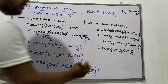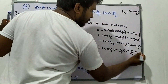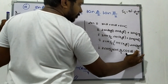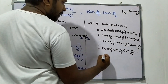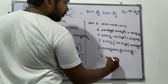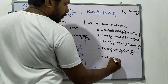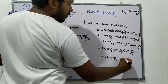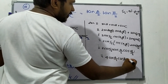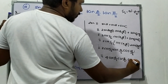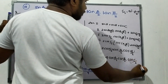So multiplying through by 2, the denominator simplifies to 4 cos A by 2 times cos B by 2 times cos C by 2.